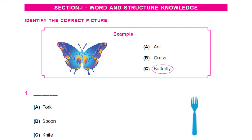You'll be shown a picture as an example and you need to choose the name for it. So let's look at question 1. Can you guess the name for this object shown? Good! It is option A, fork. Well done!